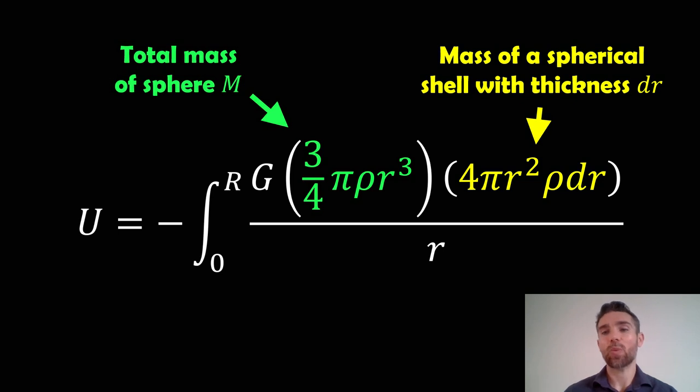And then we've got the mass of a spherical shell with thickness dr. So let's think of it like the skin around the sphere. It's a small shell which has some thickness dr, written in the same sort of manner.